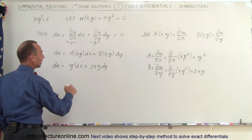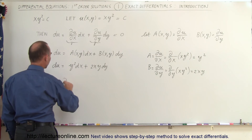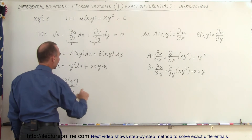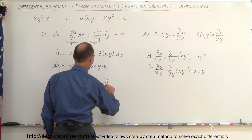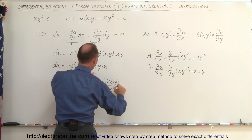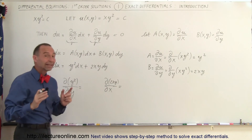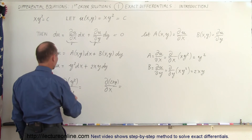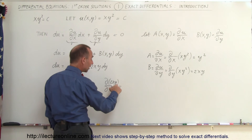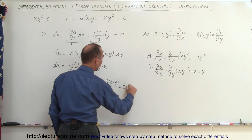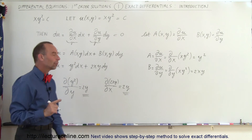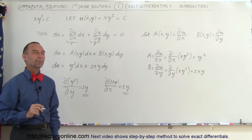Let's do that now. We take the partial of y squared with respect to y, and the partial of 2xy with respect to x. If those are equal to each other, this is an exact differential. The partial of y squared with respect to y is 2y, and the partial of 2xy with respect to x — where y is a constant — is also 2y. Since 2y equals 2y, this is confirmed to be an exact differential.